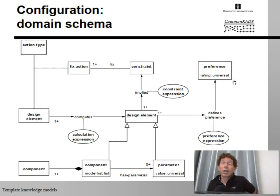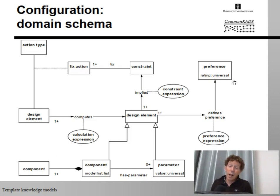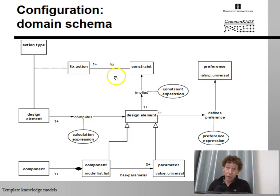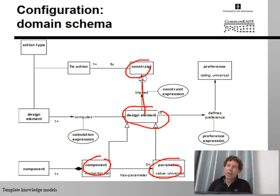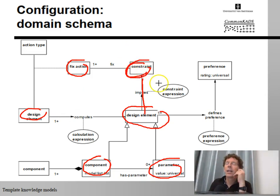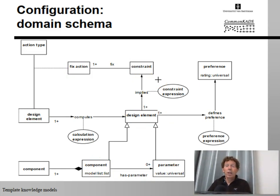Configuration tasks also come with their own domain schema, just like every task has a domain schema. Every task in the library requires certain types of domain knowledge, and these are specified by the domain schema. The configuration task requires design elements — which could be components and parameters — and constraints. These design elements imply constraints, and there are actions that relate design elements with constraints. This is a fairly complicated domain schema, and it pays to take a close look at the description in the book along with the variations.